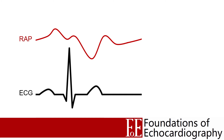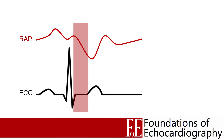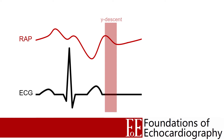Here we have a typical right atrial pressure trace with an ECG. The A wave is the rise in RA pressure from atrial contraction in sinus rhythm. The C wave coincides with tricuspid valve closure. The X descent is the drop in RA pressure as the tricuspid valve moves apically during ventricular systole. The V wave is the rise in RA pressure as the RA refills during the second half of systole, and the Y descent occurs when the tricuspid valve opens and blood leaves the RA heading into the RV.